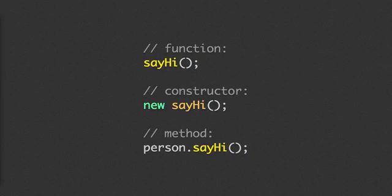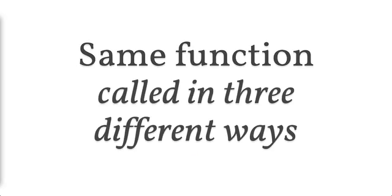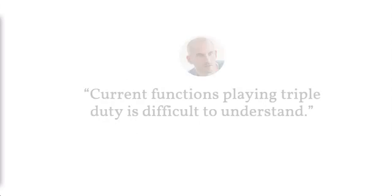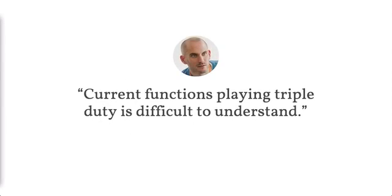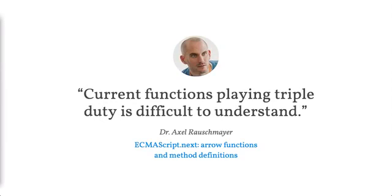Here's a very simple example where we define a sayHi function — just a plain function — and then we have a person object with a sayHi property that points to this function. So now it's kind of like it's a method as well. We can call this function directly and treat it like a function, we can invoke it with `new` and it's going to act like a constructor, or we can access it via the person object and it's going to act like a method — and it's different in every case. The context shifts: window, the new instance, or person — it all depends on how we called it. Axel Rauschmayer described this problem as current functions playing triple duty, and I think that's key to why context is so difficult to wrestle with in JavaScript.